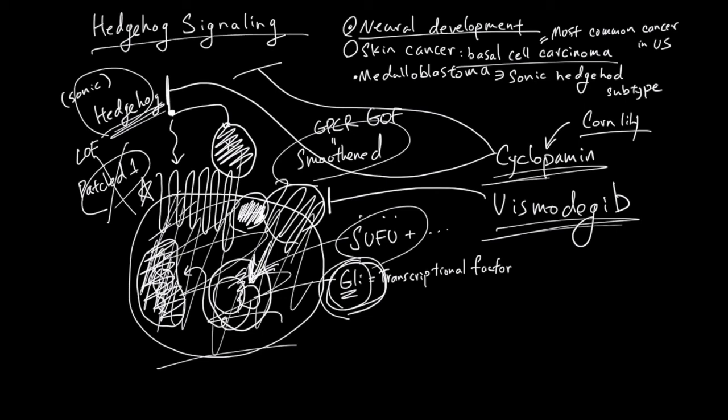In summary, the hedgehog pathway uses hedgehog ligand. There are many hedgehog ligands in neural cells. Sonic hedgehog is used. And hedgehog ligand activates patched. Activated patched stops inhibiting smoothened. Activated smoothened now can release GLI from the SUFU suppression complex. And the free GLI changes gene expression and cellular properties.